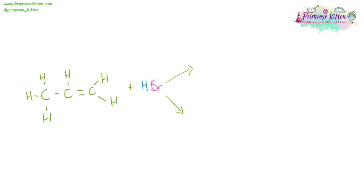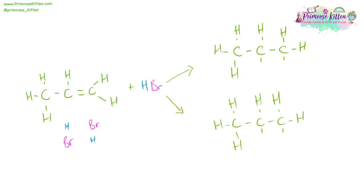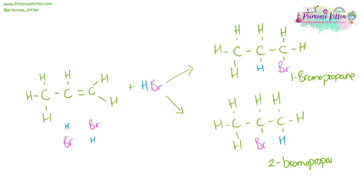If we add hydrogen bromide to propene, we're going to get two different products. In one product, the hydrogen will go on this carbon and the bromine on this carbon, and in the second product, the hydrogen will go on this carbon and the bromine will go on this carbon. I've drawn them here in different colours to make the difference clearer. The products are 1-bromopropane or 2-bromopropane.